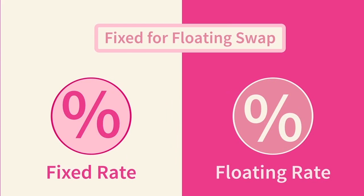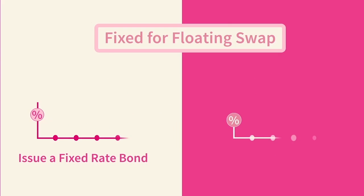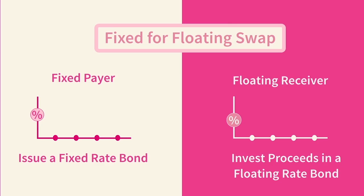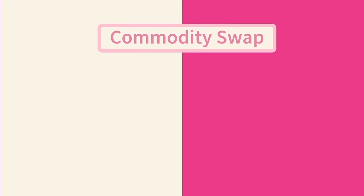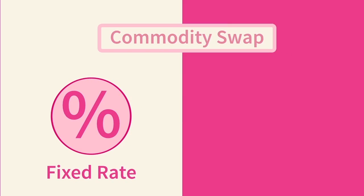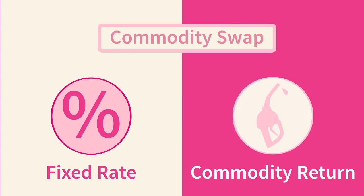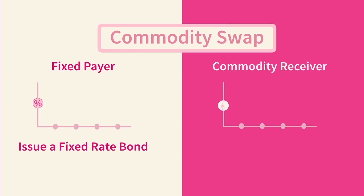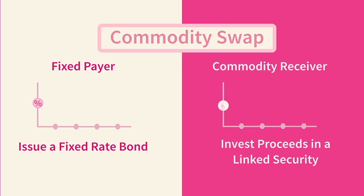For example, if we wanted to replicate the cash flows of a fixed-for-floating swap, we would issue a fixed rate bond, taking in principal and obligating ourselves to pay a fixed amount each period, and then we would replicate the received floating side of the swap by investing that principal in a floating rate instrument with matching cash flow dates. With a commodity swap, we are contracted to pay a fixed rate in order to receive a certain quantity of aviation fuel each period. In this case, we again issue a fixed rate bond to replicate the fixed payments, but we invest the proceeds into some instrument whose value is linked to the price of the aviation fuel we expect to receive.